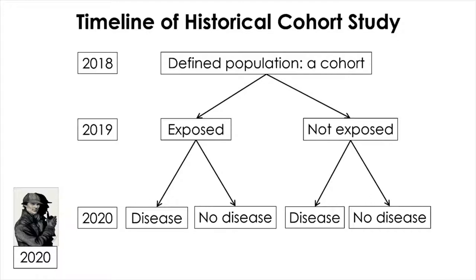Like the prospective design, retrospective cohort studies are also considered longitudinal because investigators examine health outcomes over a period of time. The main difference between the prospective and retrospective cohort study is that in retrospective cohort studies, all the cases have already occurred and exposure information is available before the investigation. In prospective cohort studies, exposure information is collected at the beginning, before any subjects have developed any of the outcomes of interest.